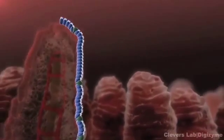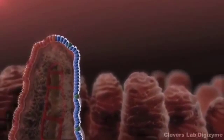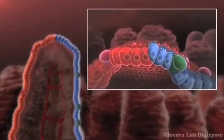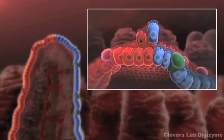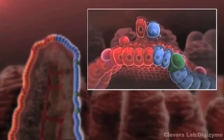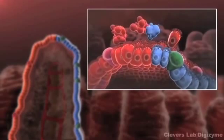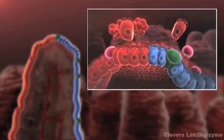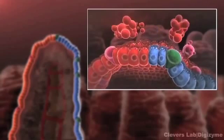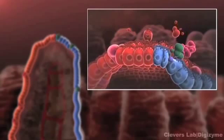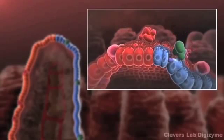When the differentiated cells reach the tip of the villus, they undergo apoptosis and are shed into the lumen of the small intestine. The entire process of out-migration and cell death is completed in just three to four days.